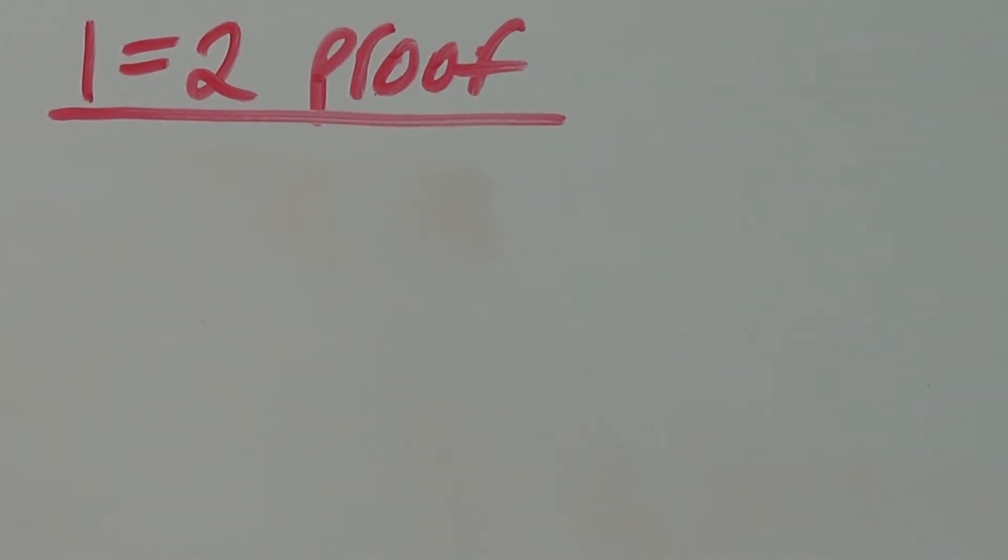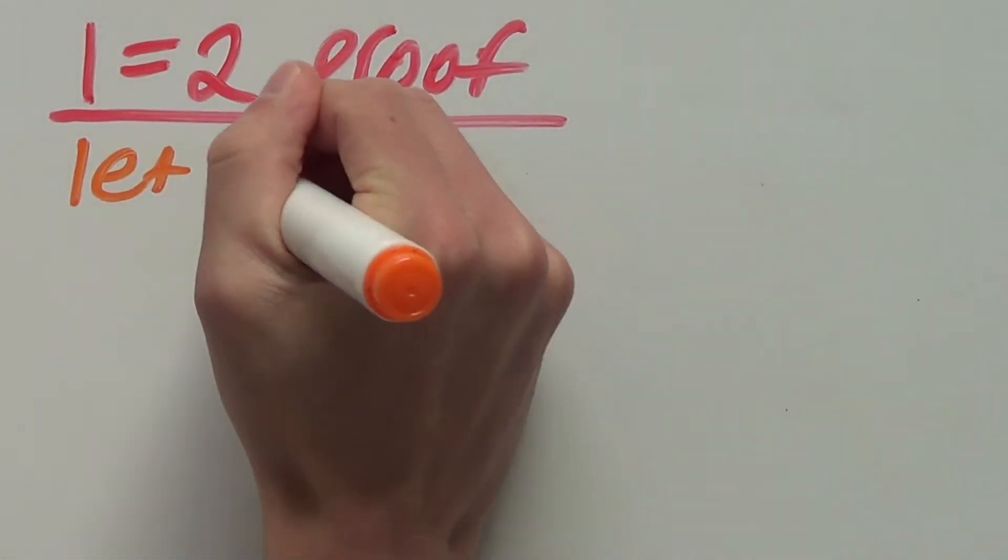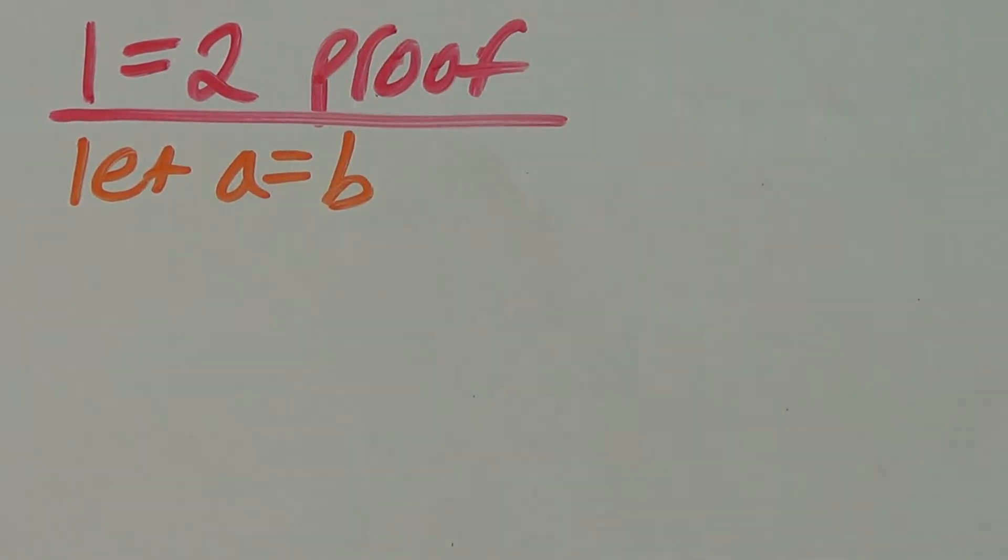So this is just a fun random video and to understand it all you need to know is a basic understanding of algebra, a high school understanding of algebra. So firstly let's let a equal b. So whatever a is, b is. They're the same number.